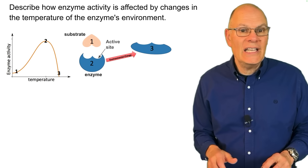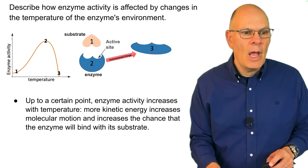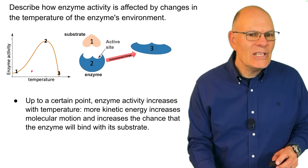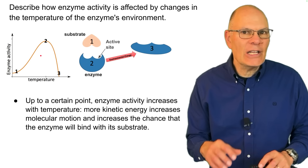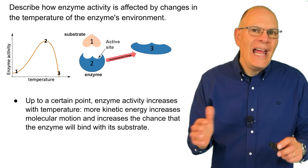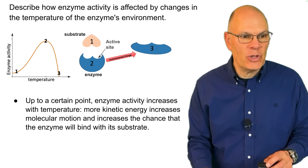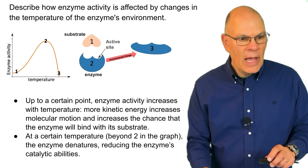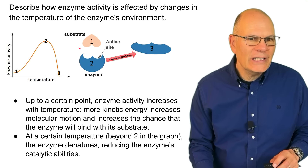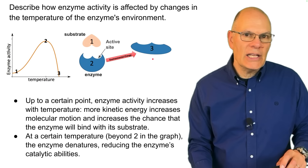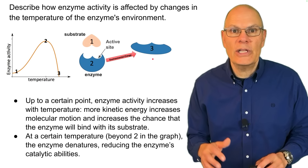Describe how enzyme activity is affected by changes in temperature. Up to a certain point, enzyme activity increases with temperature because there's more kinetic energy that increases molecular motion, and it increases the chance that the enzyme will bind with its substrate and catalyze the reaction. But at a certain temperature, the enzyme will denature — it'll change its shape, reducing the enzyme's catalytic abilities because it'll no longer be able to bind with its substrate.